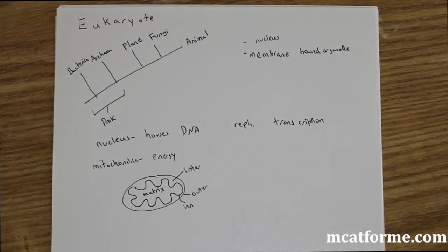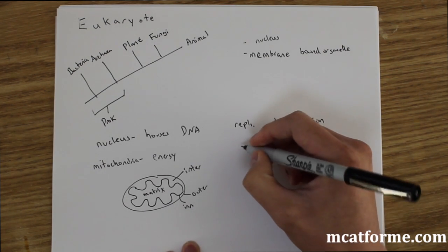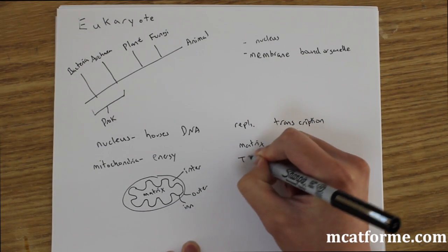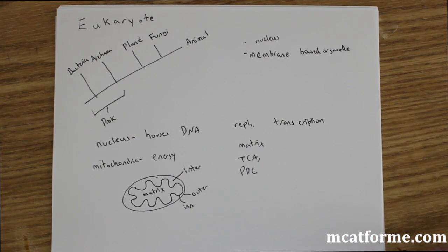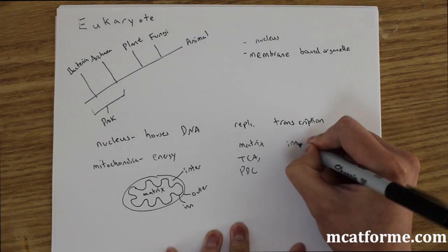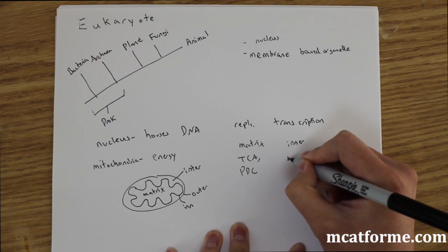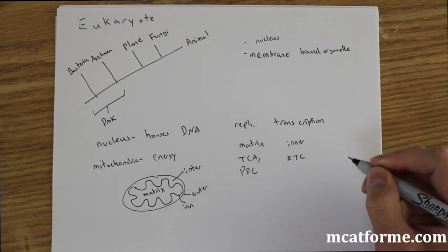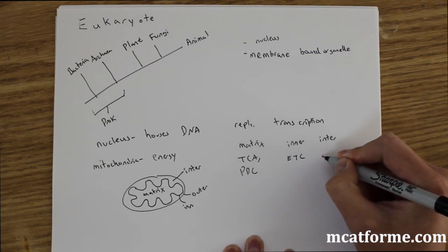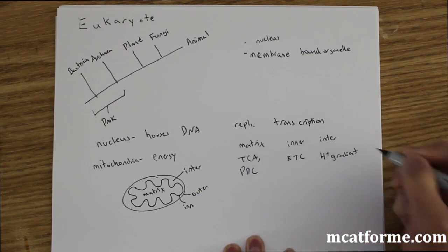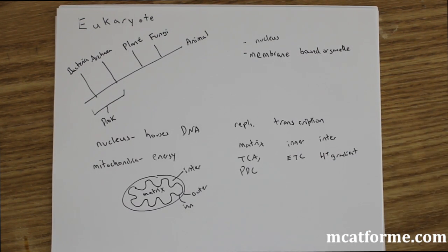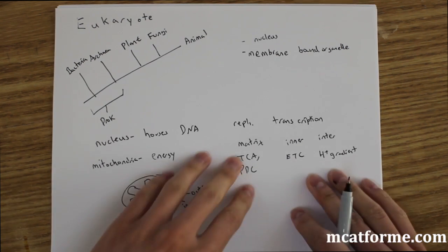A couple things happen in each of these locations. In the matrix, we're going to have the TCA and the PDC cycle occur. And on the inner membrane, that's where the electron transport chain is located. The intermembrane is where we get that proton gradient, and that as well has to do with the electron transport chain. That's pretty much all we need to know for the mitochondria, definitely where all our energy will come from.